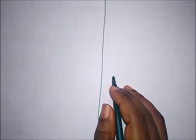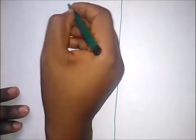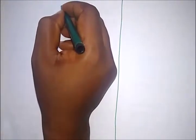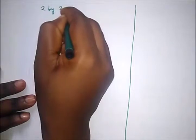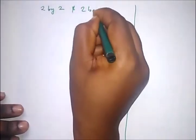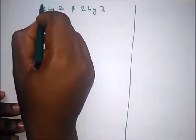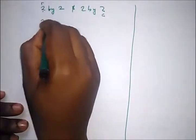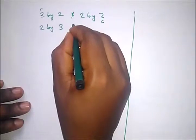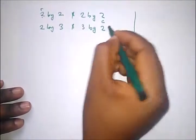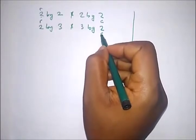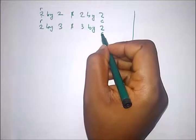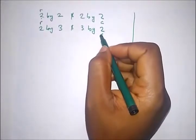In matrix multiplication, we must know that for two matrices to multiply each other, the number of columns in the first matrix must equal the number of rows in the second. So a 2×2 matrix can multiply another 2×2, and a 2×3 matrix can multiply a 3×2 matrix.